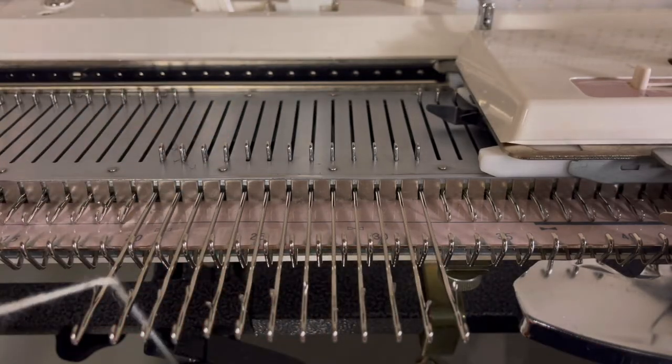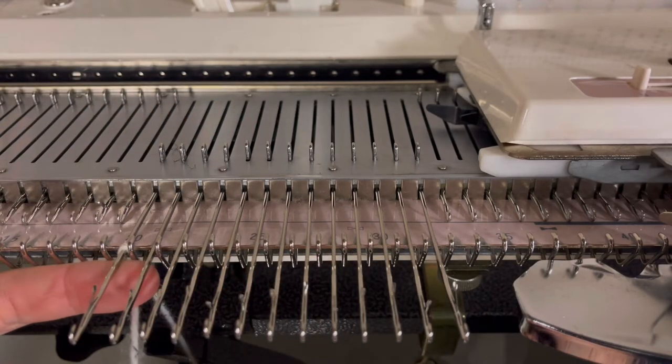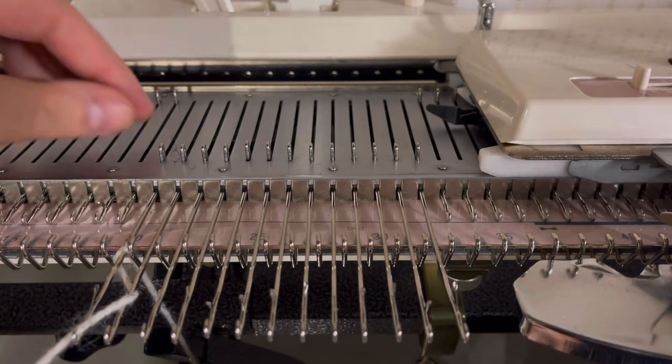Begin this cast-on by bringing the working yarn between the first and second needle, wrapping over the first needle, and coming up between the second and third.